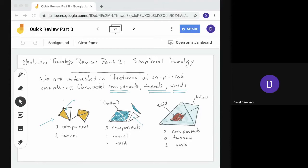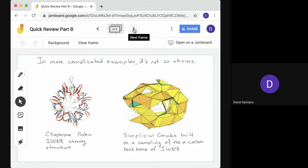Now, in these cases, it was relatively simple to figure out what's going on. We could see all the pieces, there weren't very many simplices, but that's not always the case. So here's another example that's more involved. You see here on the left, it's an image from the protein databank of a chaperone protein called 1WNR. So it's showing you the structure, the secondary structure, so we see what are known as alpha helices in blue and beta sheets in red.